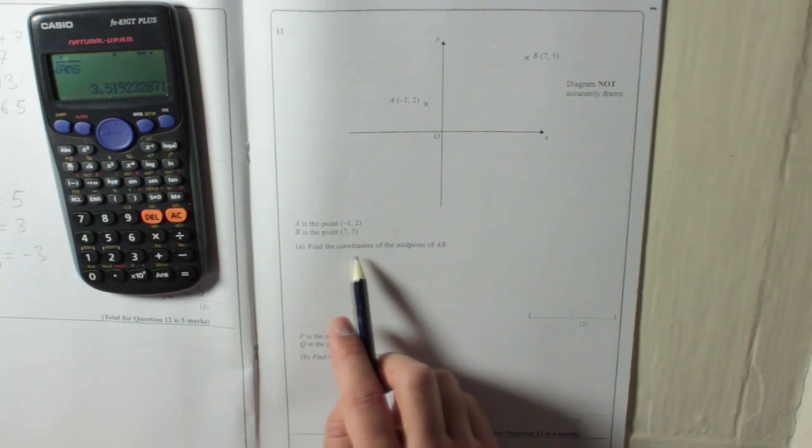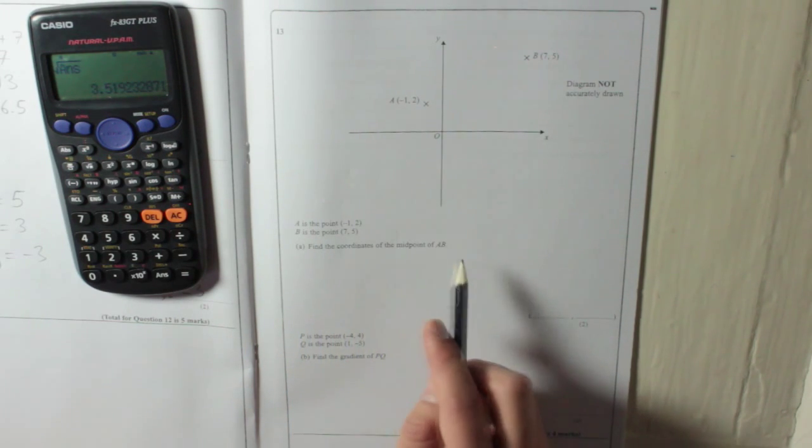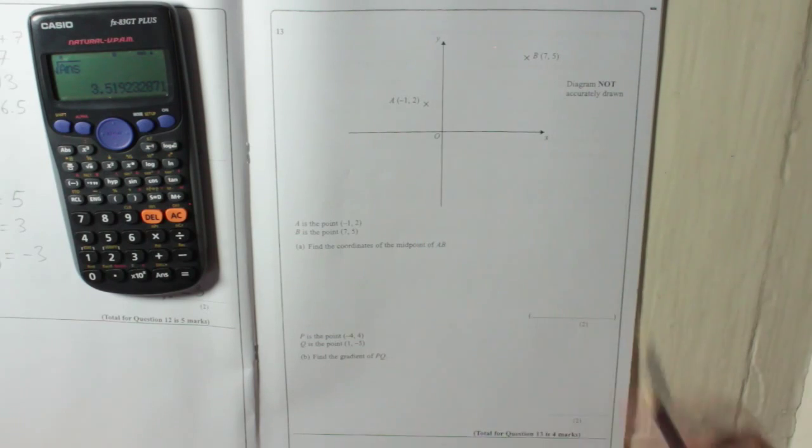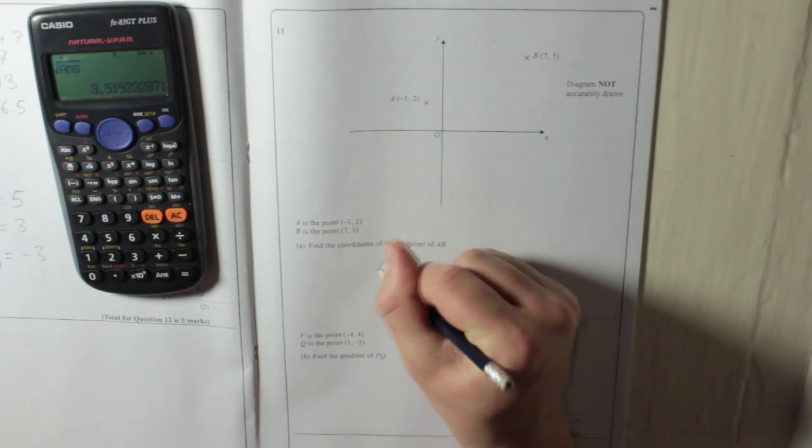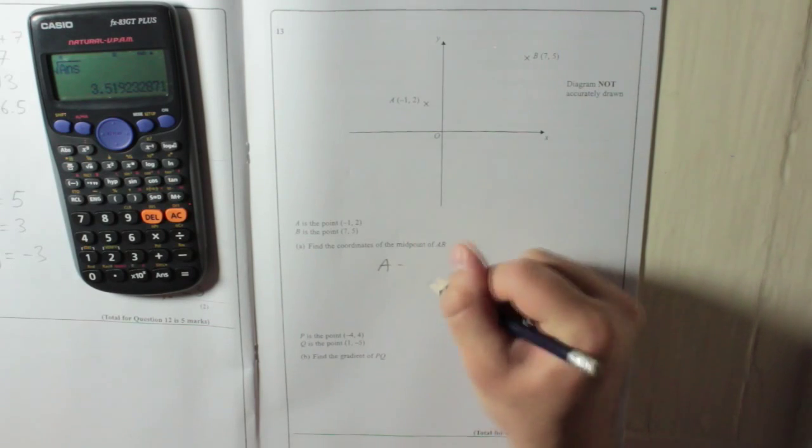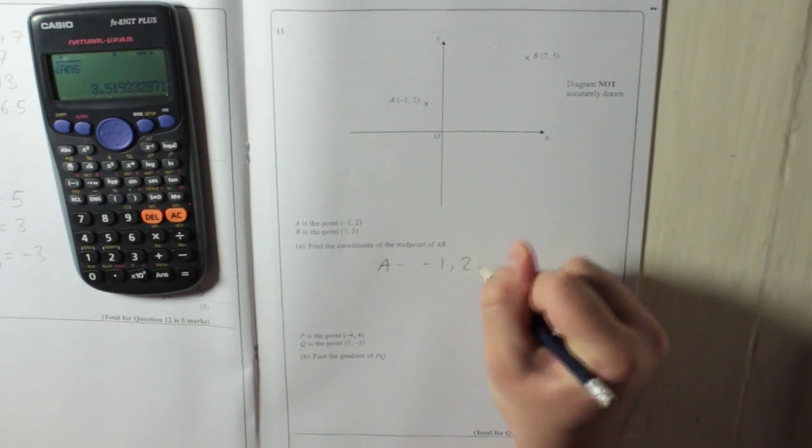A. Find the coordinates of the midpoint of AB, so the midpoint of A and B. So the way we do that, we're going to take the coordinates of A, which is minus 1, 2.